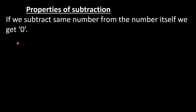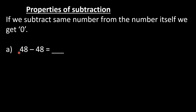Property number 2: if we subtract the same number from the number itself, we get 0. Like 48 minus 48 — suppose you have 48 toffees and you give all toffees to your friends, so how many are left? That is 0. So we will write 0 here.